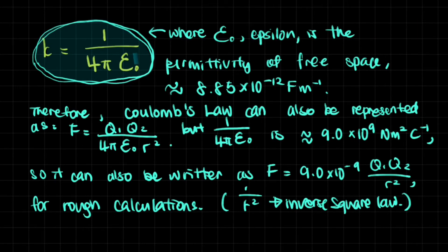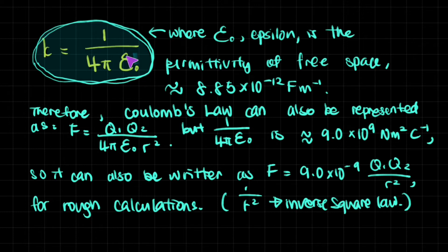We can find an exact value for the constant of proportionality. k equals 1 divided by 4πε, where ε is a Greek letter called the permittivity of free space, approximately 8.85 times 10 to the power of negative 12. Therefore, Coulomb's Law can be written as F equals q1 times q2 divided by 4πεr squared.